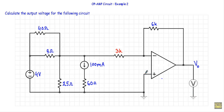You will see the non-inverting terminal is connected to ground, and the output terminal is connected to the inverting terminal through this 6 kΩ resistor. So the circuit is in negative feedback, due to which the inverting and non-inverting terminal voltages will be equal.